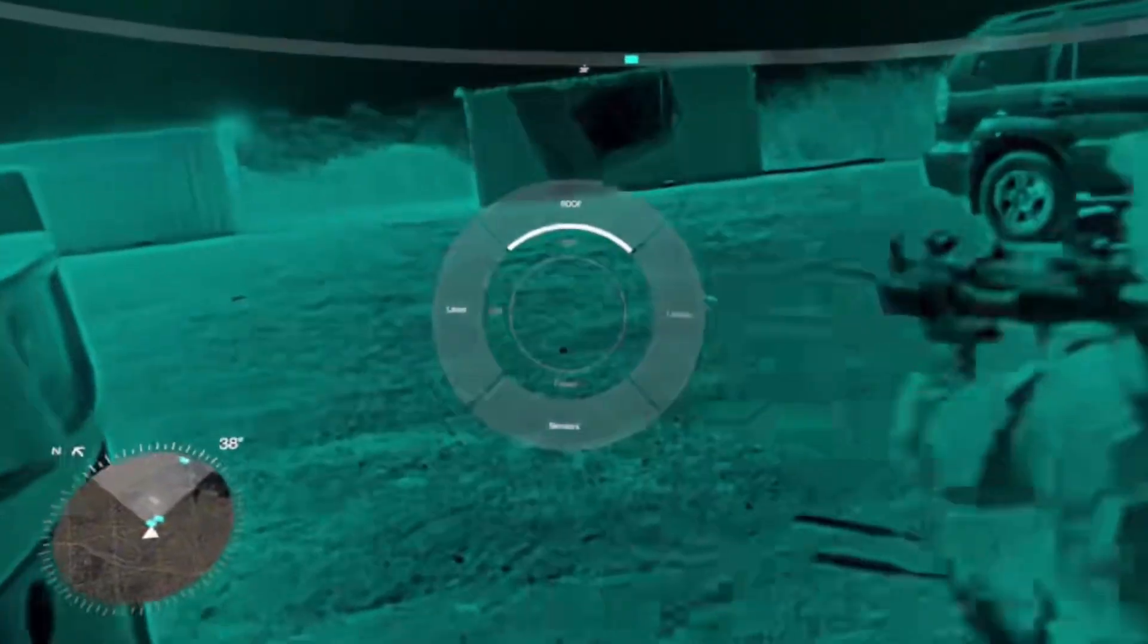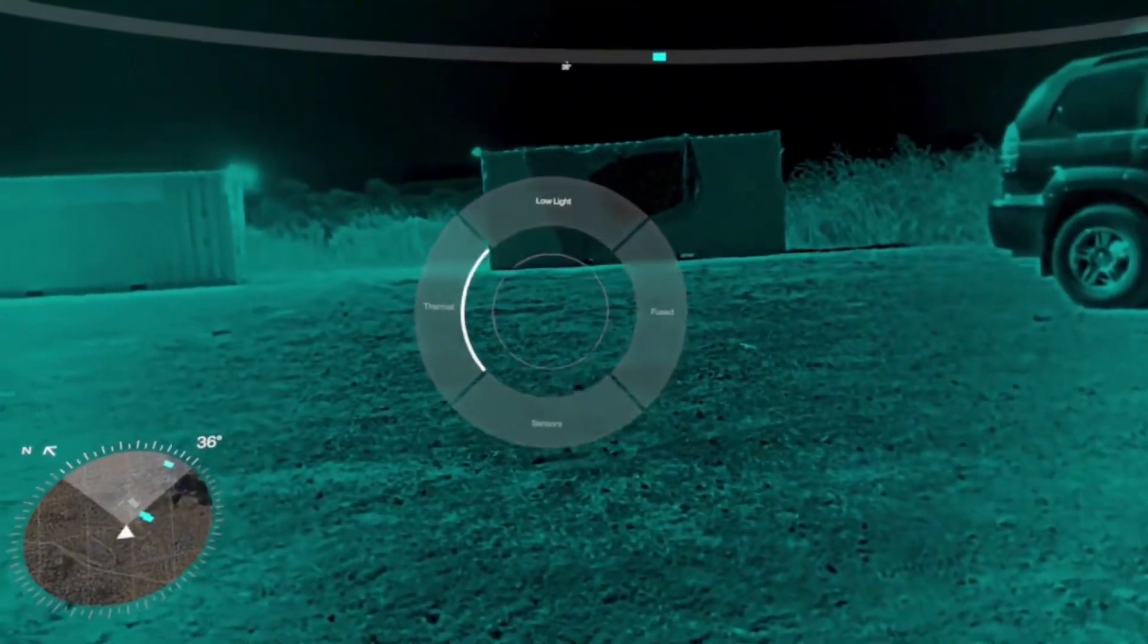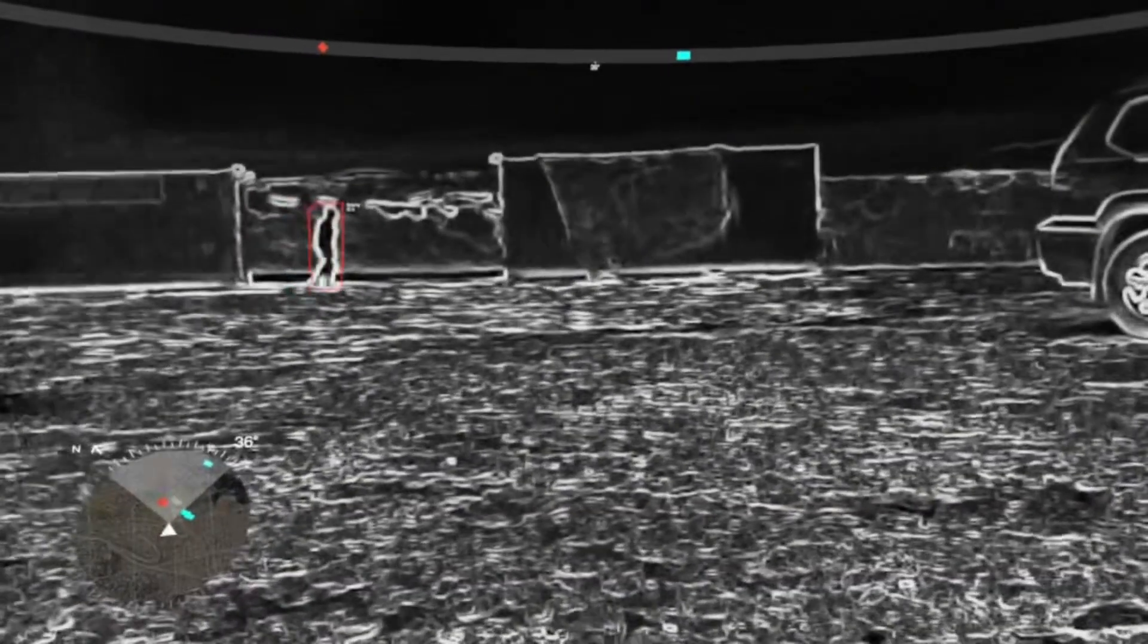Hi, everyone. Today, we're diving into something that sounds straight out of a sci-fi movie, but it's actually real. Imagine this: you can see enemies, even through solid walls. Sounds impossible? Think again.